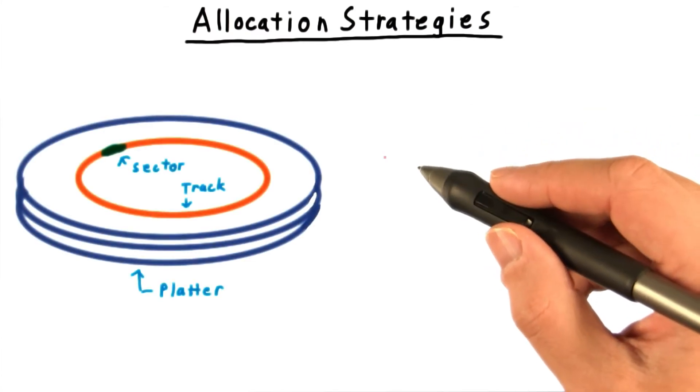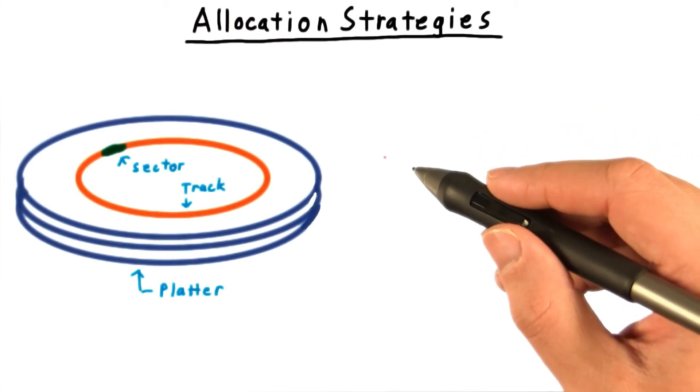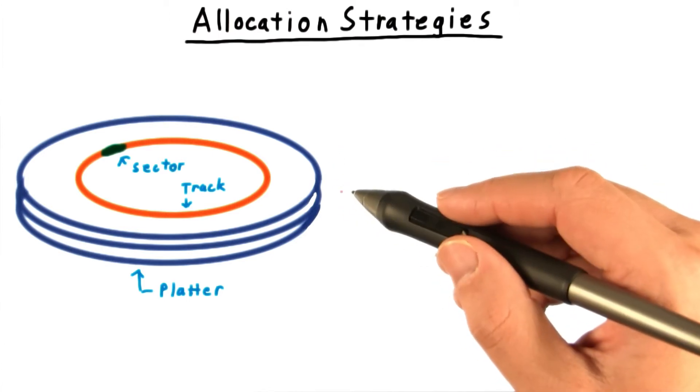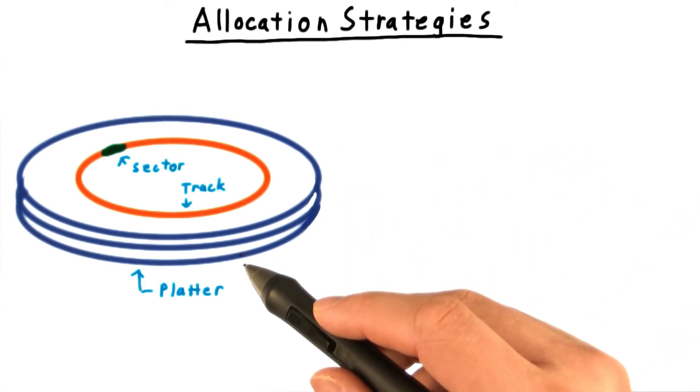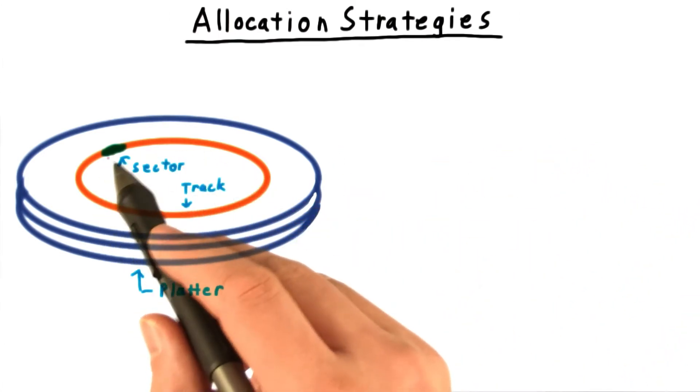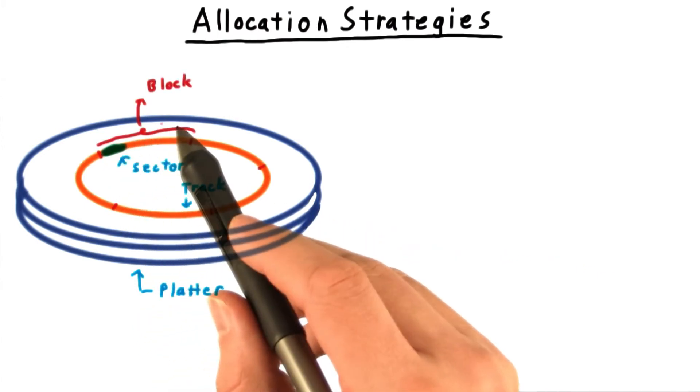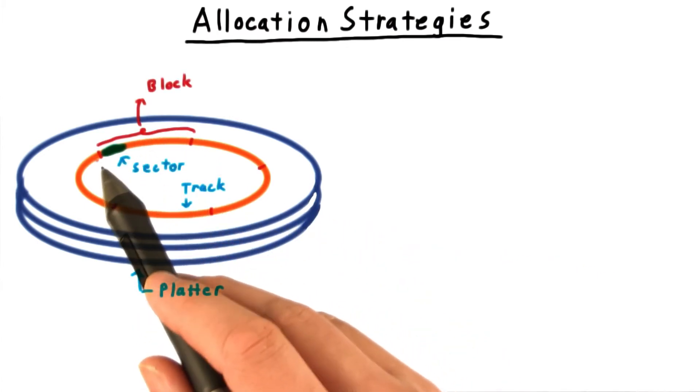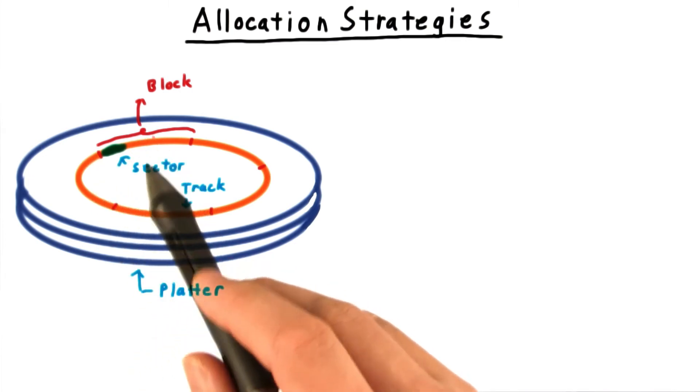In the case of a disk, a block address would need to identify the physical location. There are different vocabularies here. We'll refer to platter, track, and most specifically, sector. The block address identifies the starting sector, and the block itself might cover several more sectors.